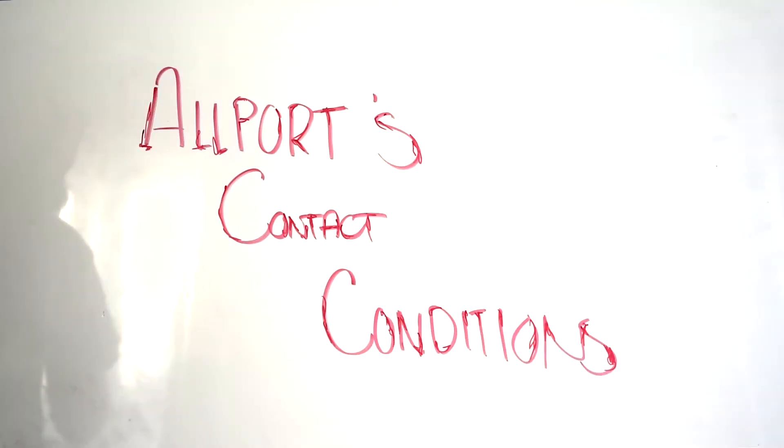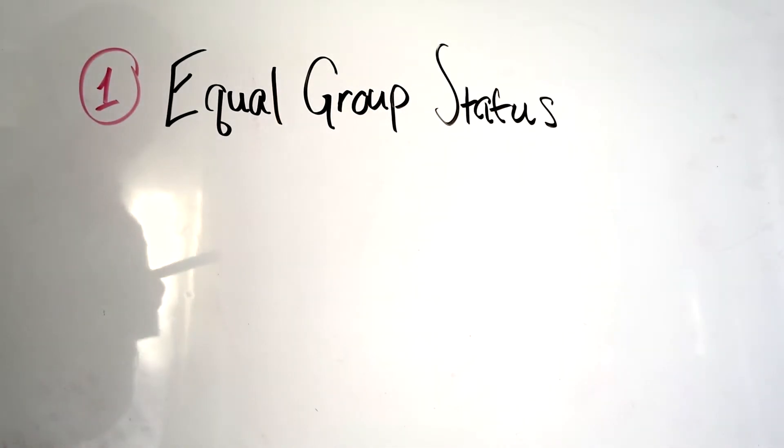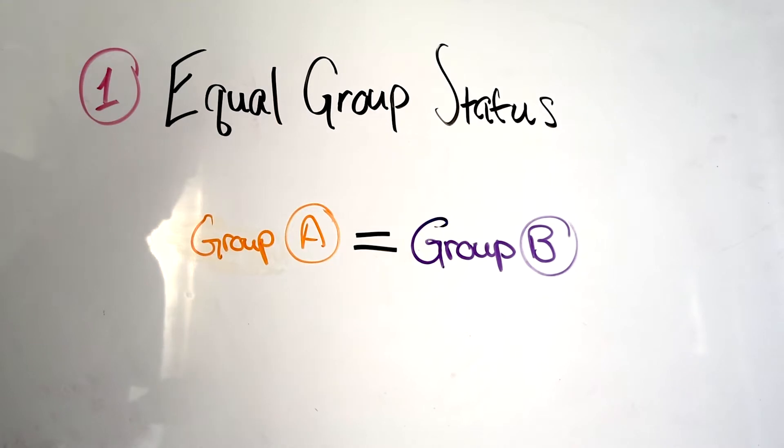He suggested four contact conditions to reduce prejudice. The first condition is equal group status in the situation. It's critical that both groups perceive equal status. Research demonstrates that equal status is effective in promoting positive intergroup attitudes even when groups initially differ in status.